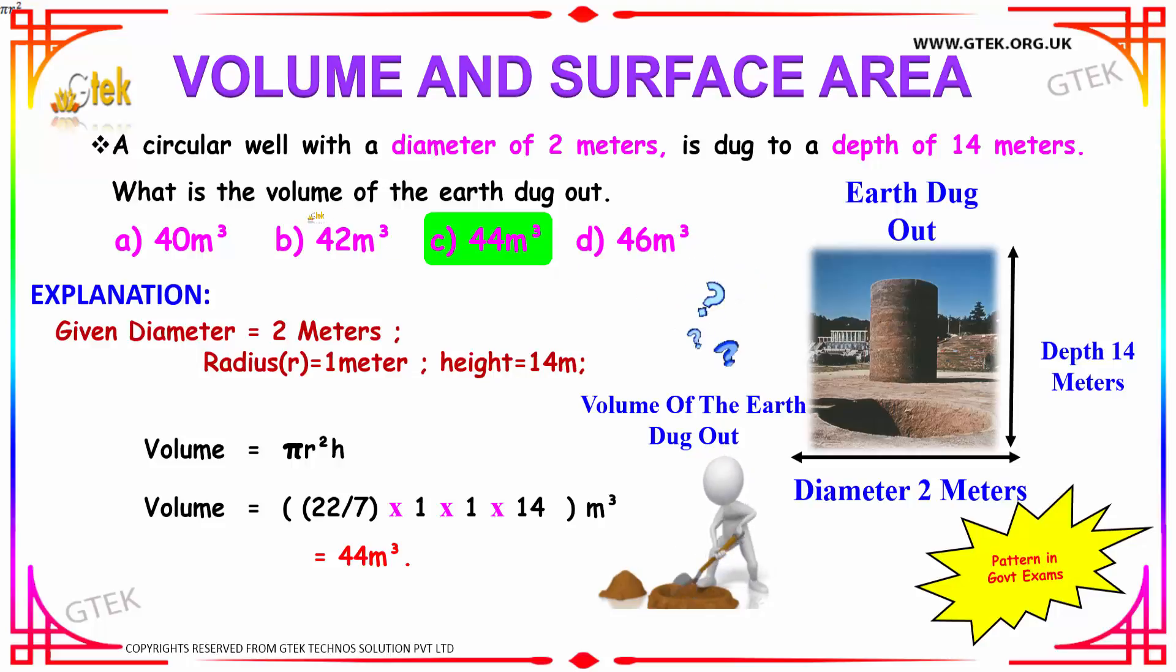So what will be the volume of the earth dug out? As you can see, when we dig out some earth, we get a cavity, and the volume of the earth that is dug out is what we have to find here. We have the options: 40 m³, 42 m³, 44 m³, and 46 m³.